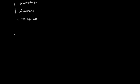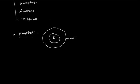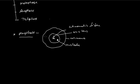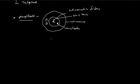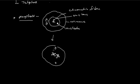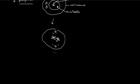In prophase, the cell has a cell membrane, a nucleus, and chromatin fibers. There is a nucleolus also present in the nucleus, and centrioles are present in the cytoplasm. In early prophase, the chromatin fibers become dense, and the nuclear membrane and nucleolus will disappear. The centrioles move towards the poles, and the spindle fibers begin to form.